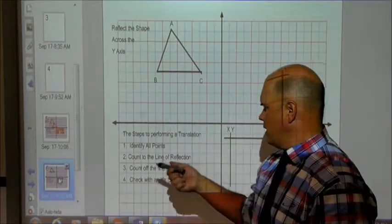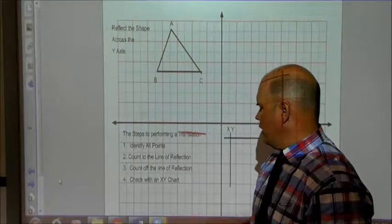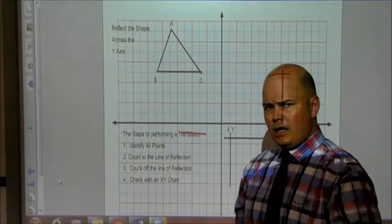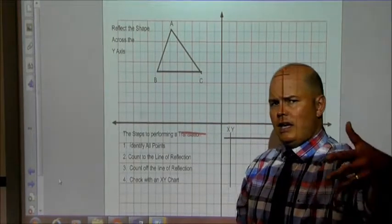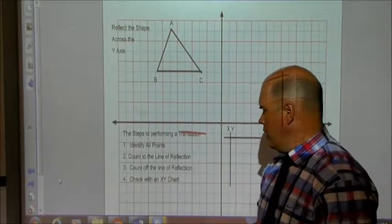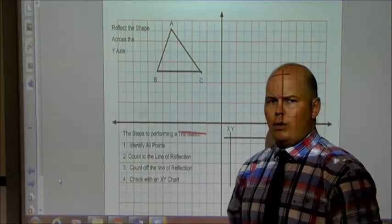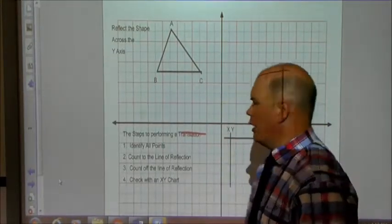The first thing you need to do is identify all points. The second thing you need to do is count to the line of reflection. The third thing is count off the line of reflection. And then, of course, make an x-y chart to see how it ended up. So here,